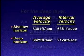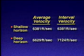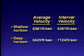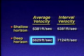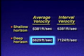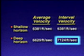So our study area has a shallow horizon with an average and interval velocity of 6,381 feet per second, and a deeper horizon with an average velocity of 6,629 feet per second and an interval velocity of 7,124 feet per second.